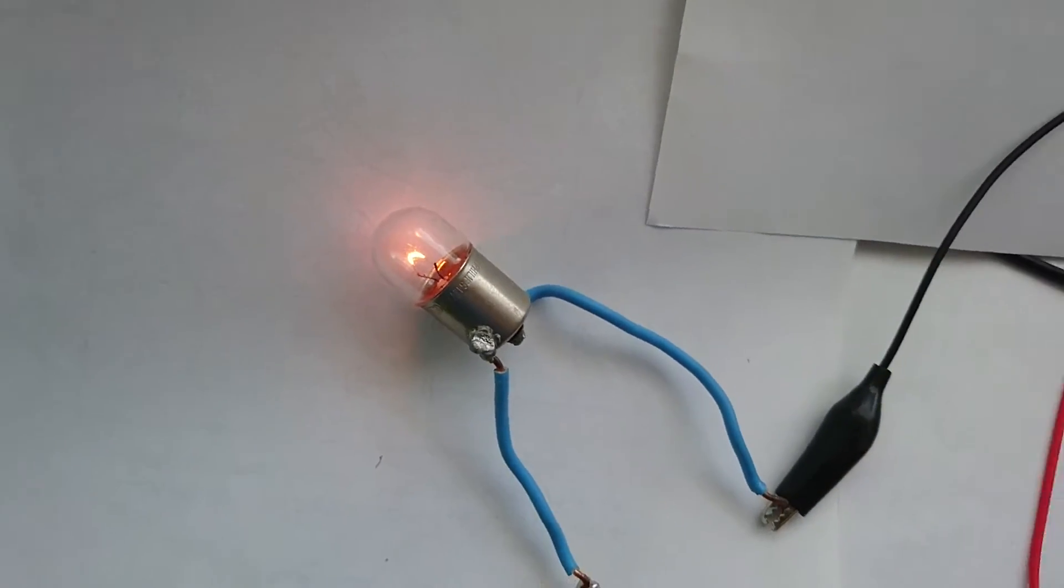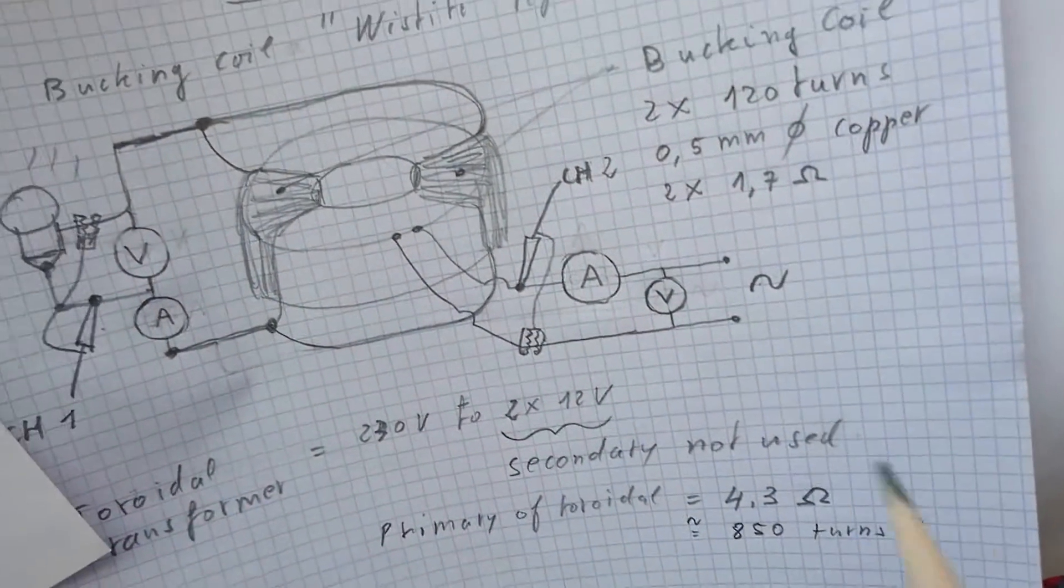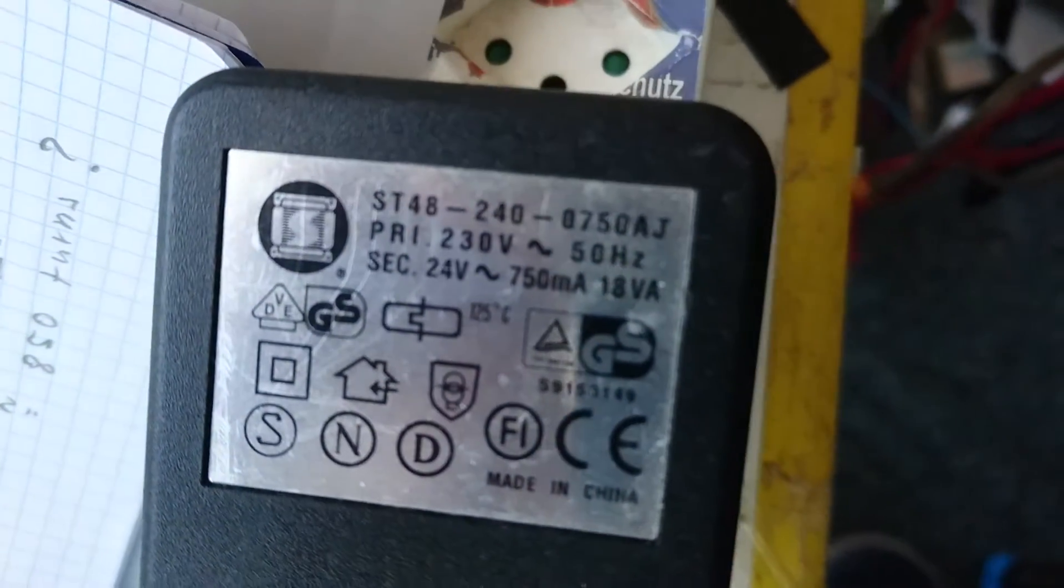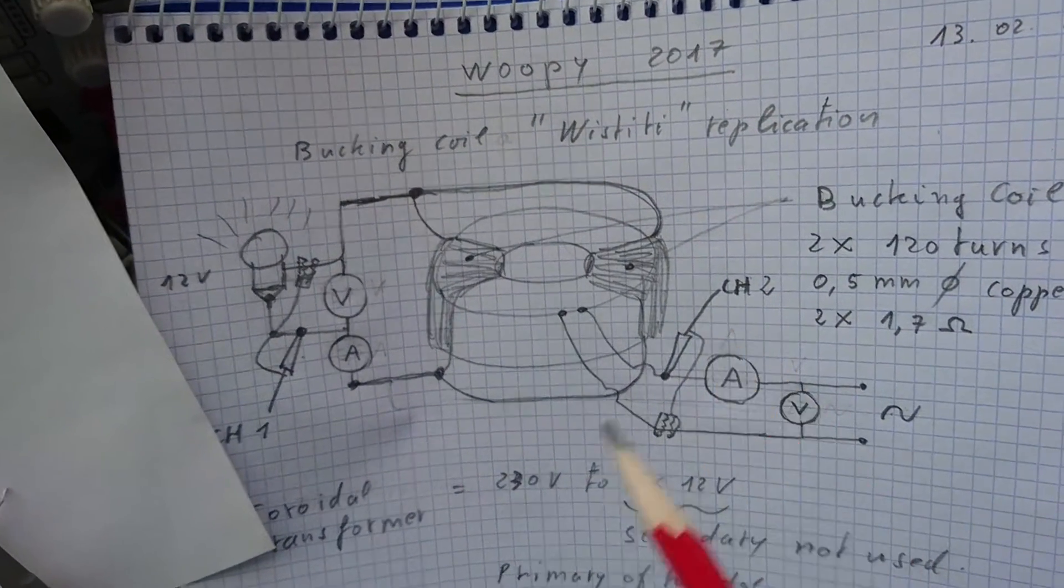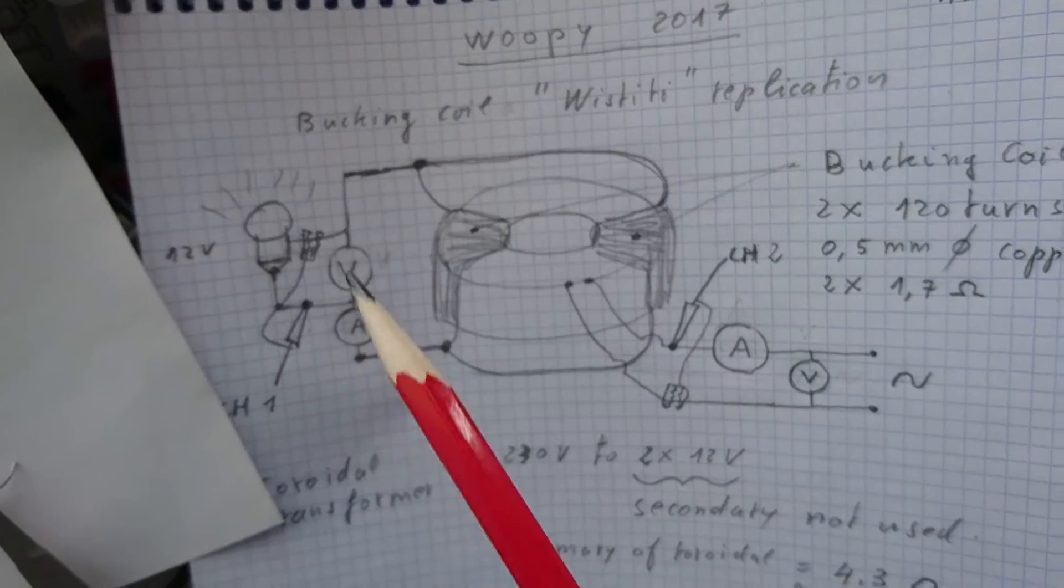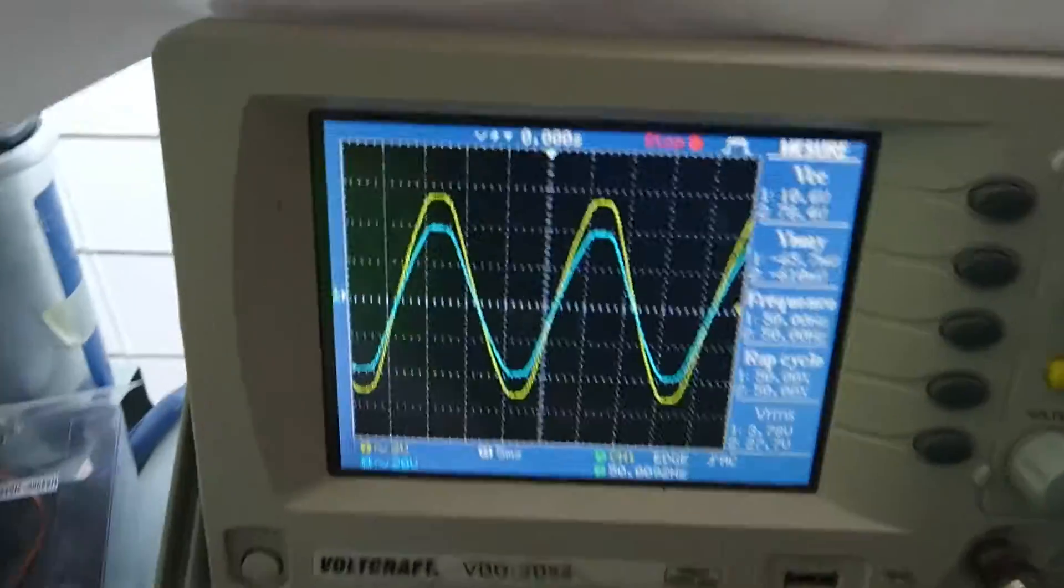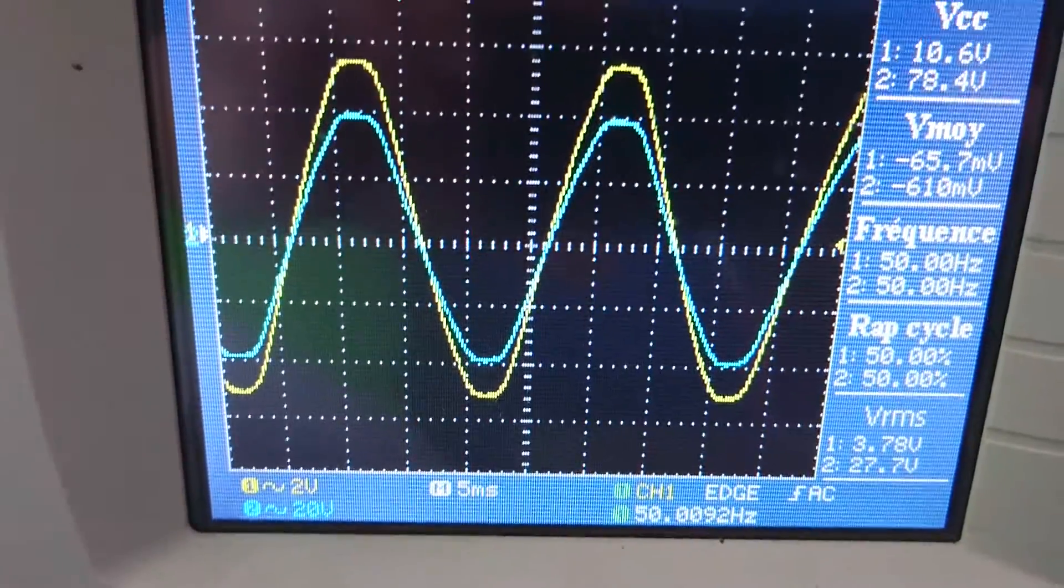Now at the input power we have a power supply which gives 24 volts AC. As you can see here there is a voltmeter and scope, same as the output. Now we go to the scope. Everything is stopped now because it is much easier to make the video. I have made this experiment many times before.